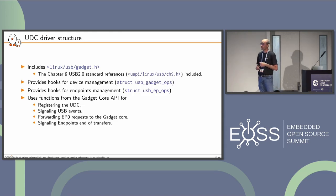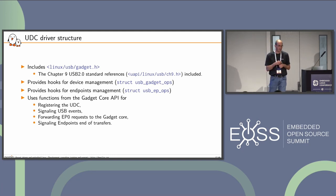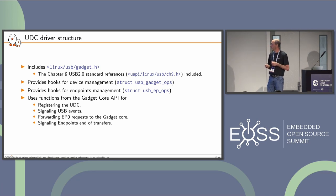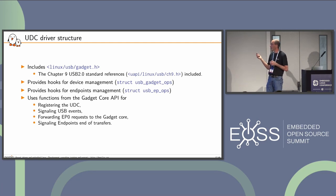In terms of structure, we include gadget.h, which in turn includes ch9.h — a file named after chapter 9 of the USB standard, defining structured enumeration and important values from the standard. We provide hooks for device management, hooks for endpoint management, and use the core API to register the driver, signal events, and so on.